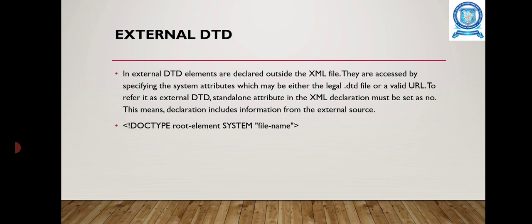External DTD means elements are declared outside the XML files. They are accessed by specifying the system attribute, which may be either a .dtd file or a valid URL. The format is DOCTYPE root element SYSTEM followed by the file name.